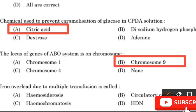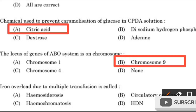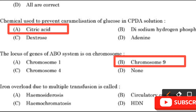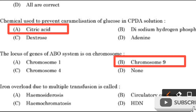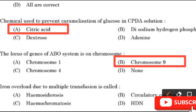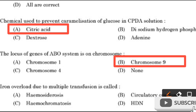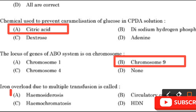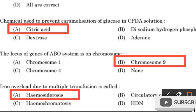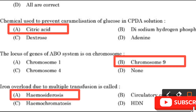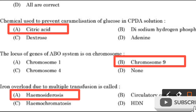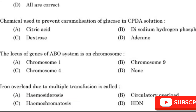Question number 13: Iron overload due to multiple transfusion is called — Hemosiderosis, Circulatory overload, Hemochromatosis, or Hemolytic disease of the newborn? Iron overload due to multiple transfusions is called hemosiderosis.